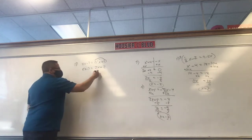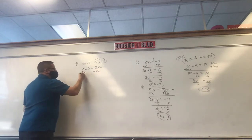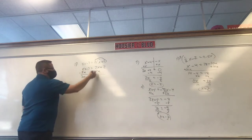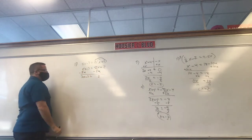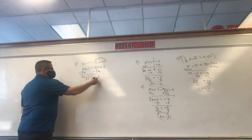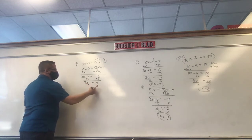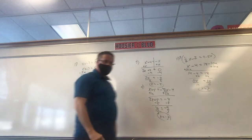Get rid of the smaller x — 2x. So 3x minus 7 equals 2. Plus 7: 3x equals 2 plus 7, which is 9. Divide by 3, x equals 3. Once you distribute, it's the same.